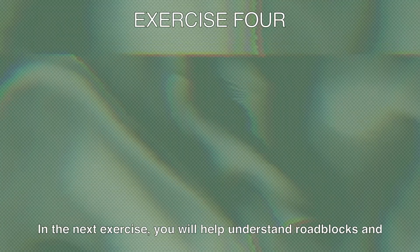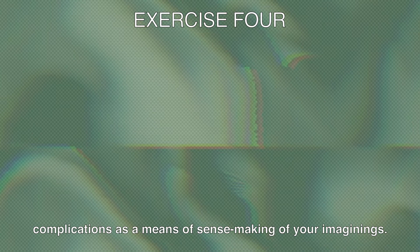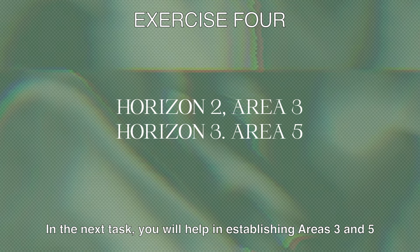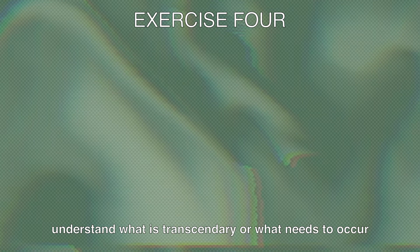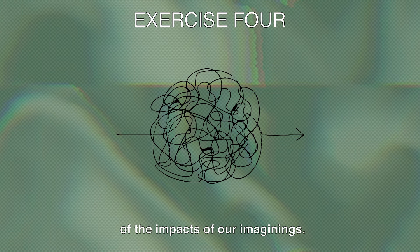In the next exercise you will help further understand roadblocks and complications as a means of sense-making of your imaginings. In the next task you will help establish areas 3 and 5 under the 3H model. In this we attempt to understand what is transitionary, or what needs to occur in the middle for imaginings to occur. We also consequently think about the complications that may arise because of the impacts of our imaginings.